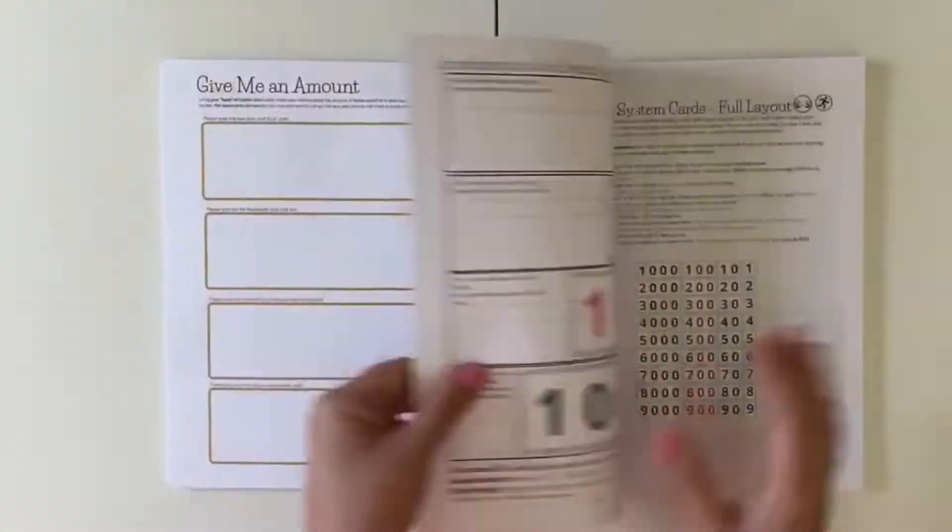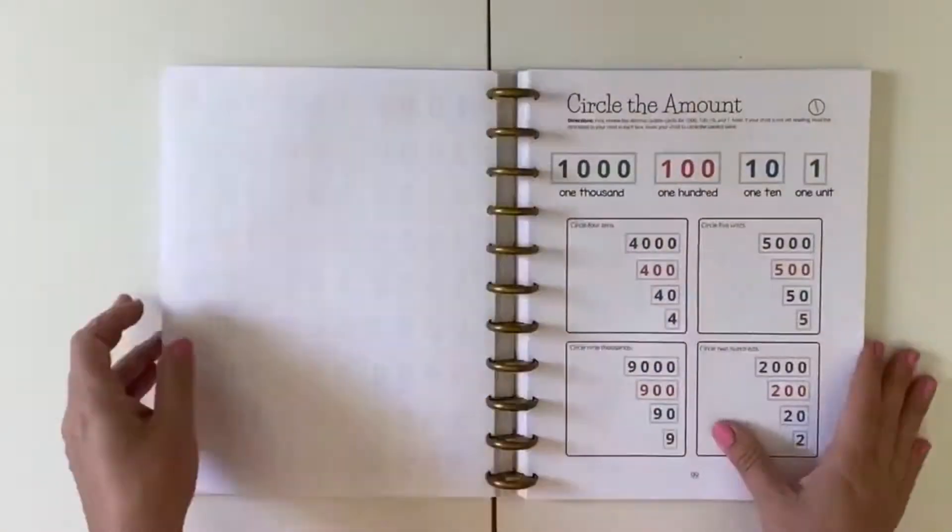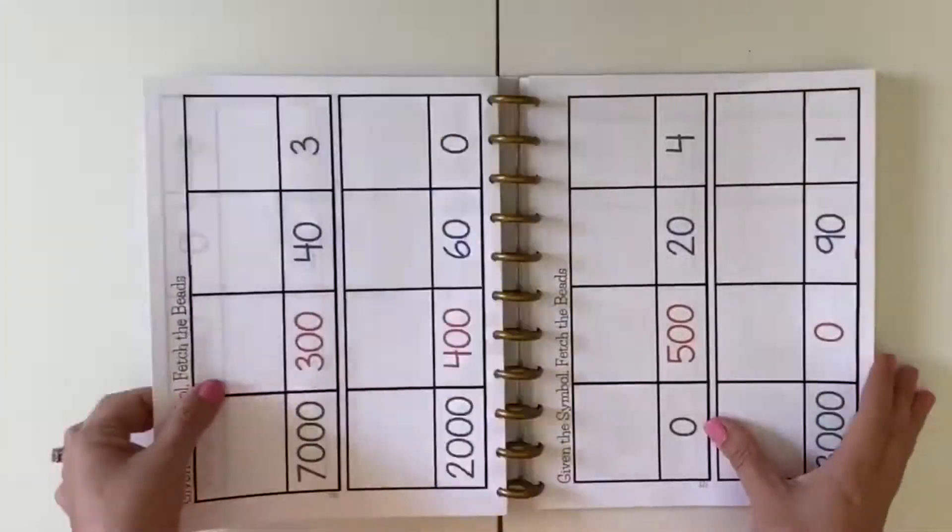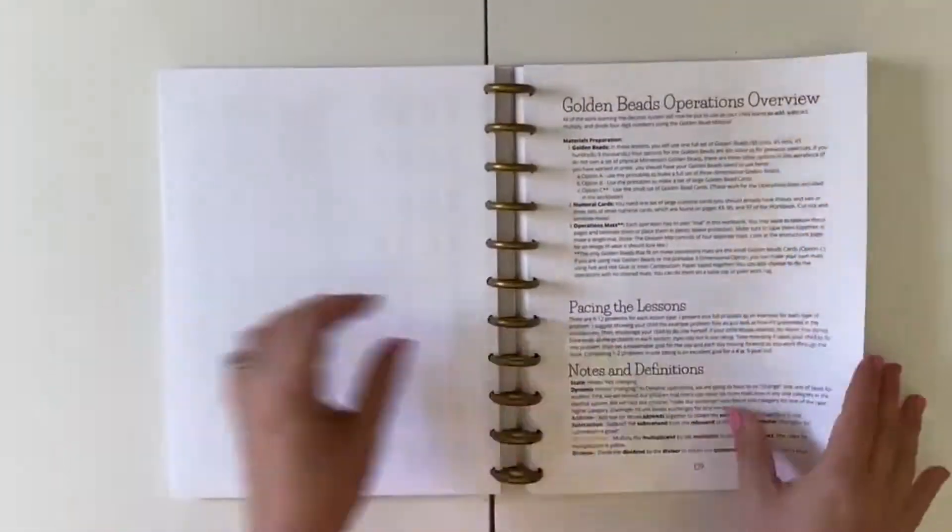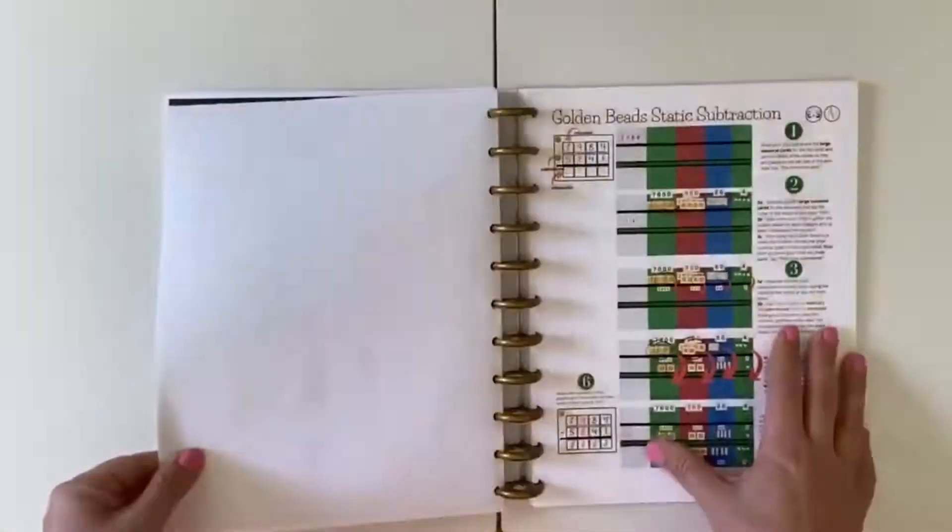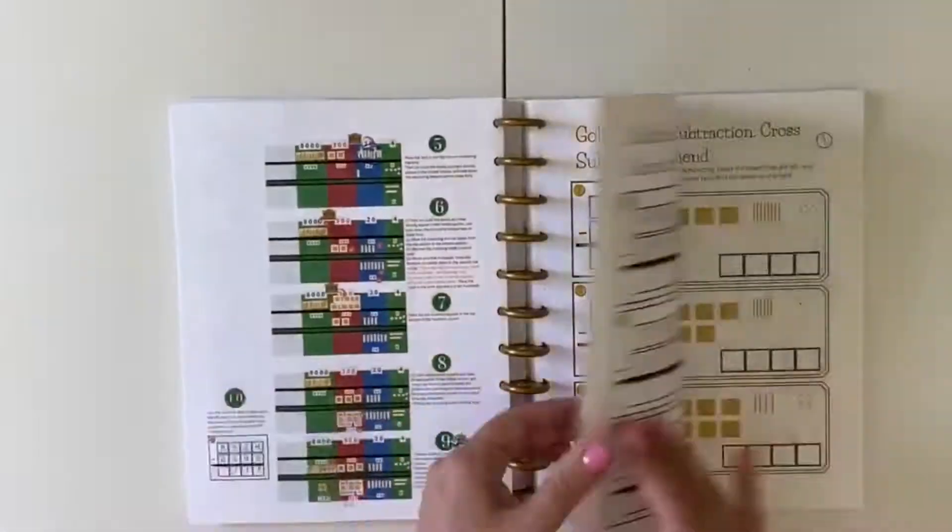Within its pages, you will find an easy-to-follow roadmap for taking charge of your child's math education. Your child will be introduced to the short bead squaring chains, the thousand chain, the decimal system, operations with the golden bead material, and a unique looping review system to help your child achieve mastery.